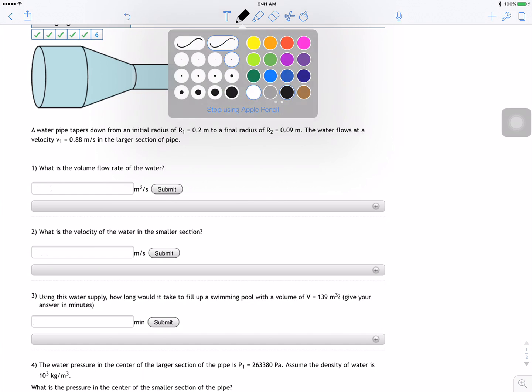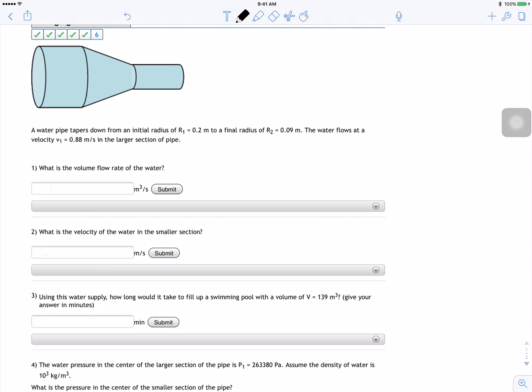What's the volume flow rate? And this guy is just V1A1, velocity times area. So in my case it's 0.88π and then R squared, which is 0.2 squared. The area of circle is πR squared.